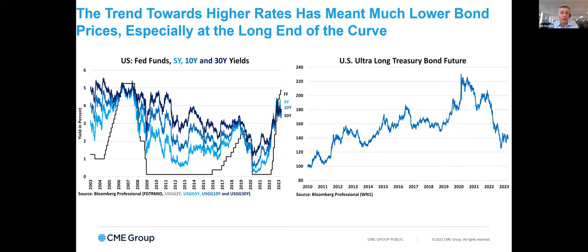Fed funds is now at 4.78% and is probably going to go to 5.125% on the 4th of May, which I think is likely, although not certain, to be the Federal Reserve's last rate hike. Other interest rates are actually now trading below that, so we've seen an inversion of the yield curve. Yield curve inversions are something that typically happen before an economic downturn.